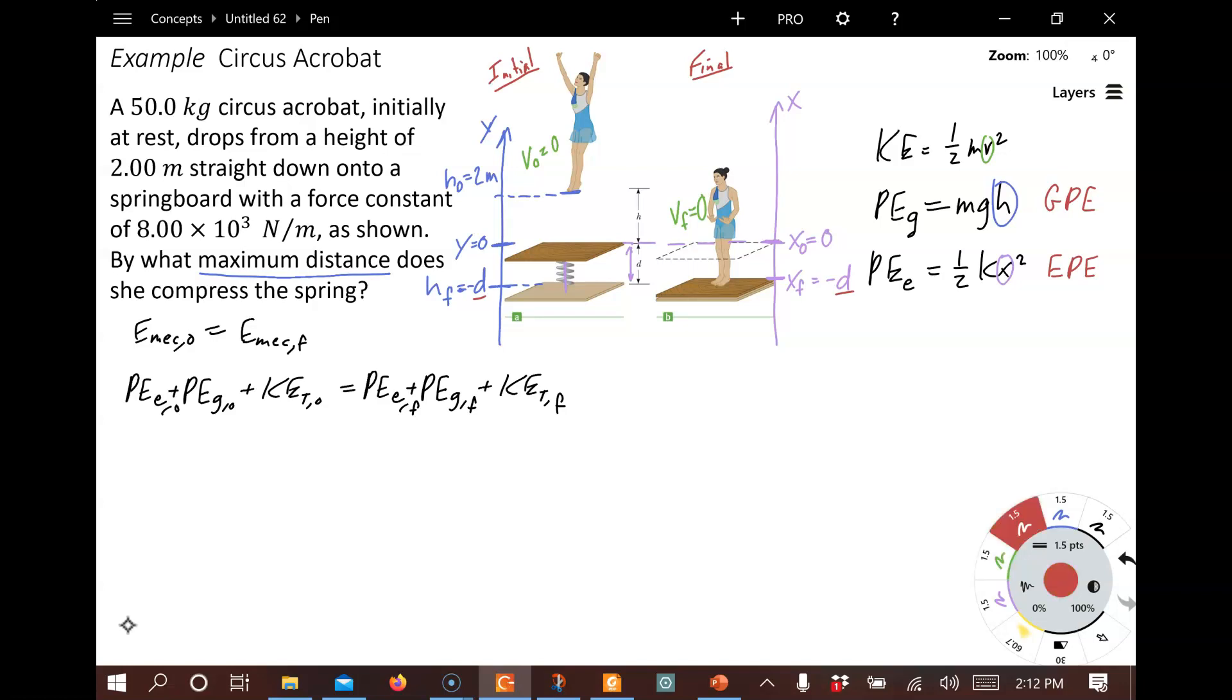Now we can cancel out all the terms that have zero. For the kinetic energy, the initial and final are both zero. So that is zero. That is zero. For the elastic potential energy, the initial position is zero, an unstretched spring. And so this is zero. And I think that's all we can cancel out. But that's helped.